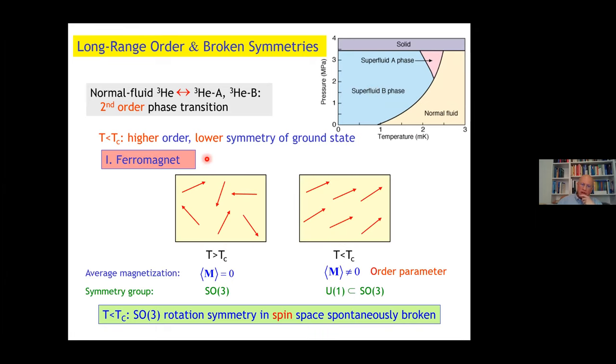We know this particularly well from a ferromagnet. Above T_C spins are disordered, average magnetization is zero. There is a symmetry group of three-dimensional rotations, SO3. Below T_C they are aligned, the average magnetization is finite, that is the order parameter. The only symmetry that remains is the rotation along the arrow, an SO2 or U1 symmetry, which is a subgroup. Below T_C, the SO3 rotation symmetry in spin space is spontaneously broken.